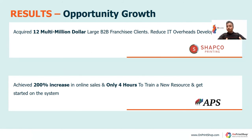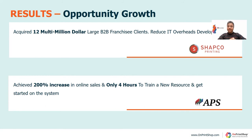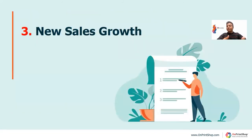The web-to-print system can also give you a huge benefit in terms of opportunity. Another customer, APS, was only offering photographic products and had thousands of schools and parents ordering those products. After implementing OnPrintShop, they introduced new products to those customers and achieved a 200 percent increase in online sales. Because they have an online system, they only need four hours to train new resources. This opportunity helped them achieve peak ROI versus the investment they made in OnPrintShop web-to-print.